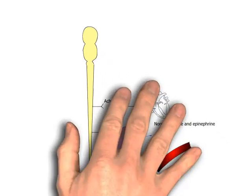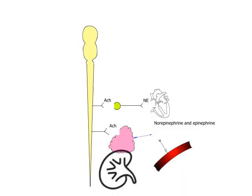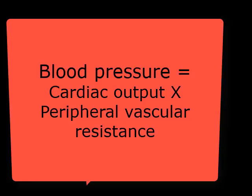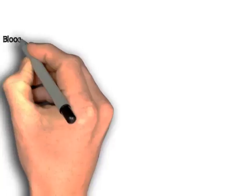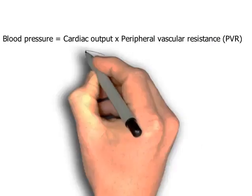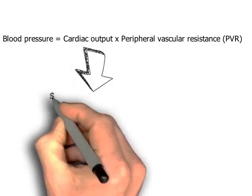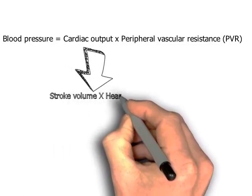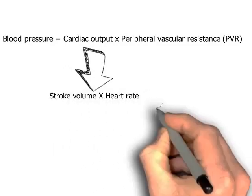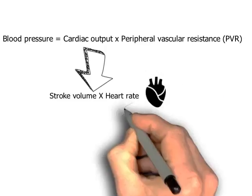Our blood pressure is primarily controlled by the sympathetic nervous system and the kidneys through their influence on cardiac output and peripheral vascular resistance. Blood pressure is the product of cardiac output and peripheral vascular resistance. The cardiac output means the amount of blood pumped by the left ventricle of the heart in one contraction — that is stroke volume multiplied by heart rate.